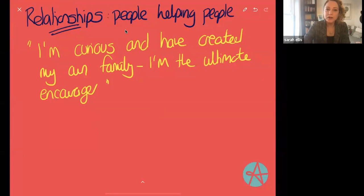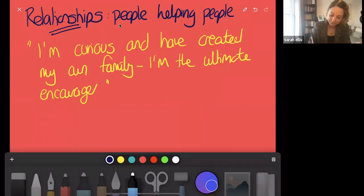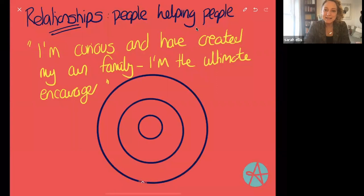Let's talk about relationships. This is another quote from Adrian. She said, I'm curious and I've created my own family. I'm the ultimate encourager. And I thought that was a really nice phrase, this idea of being the ultimate encourager. In the book, we basically steal an idea from a guy called Robert Dunbar, who talks a lot about the amount of relationships that we can successfully build at any one point in our lives. We then sort of apply that to our careers. What does your career community look like?